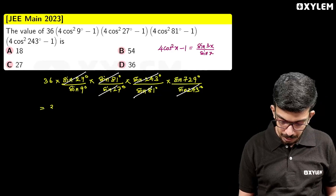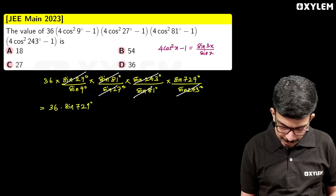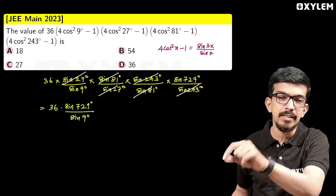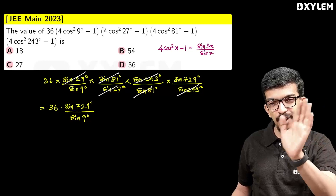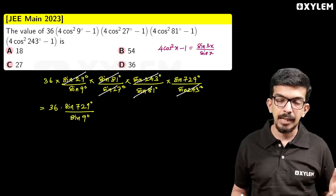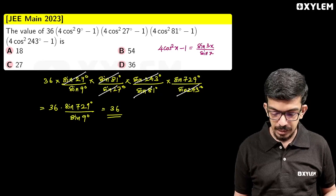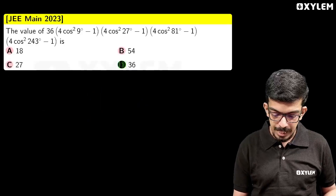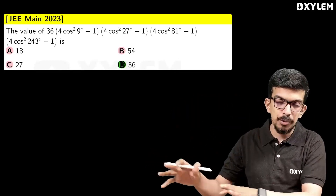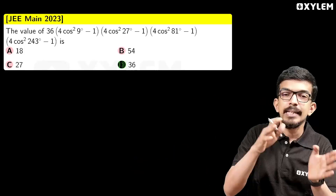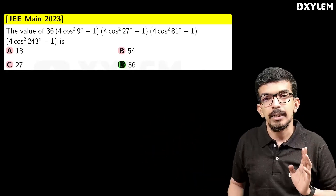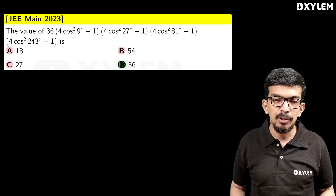So we are left with 36 × sin(729°)/sin(9°). Now 729° = 720° + 9°, and 720° is a multiple of 2π. Since sin is periodic, sin(720° + 9°) = sin(9°). Therefore the answer is 36 × sin(9°)/sin(9°) = 36. It's a very beautiful problem!